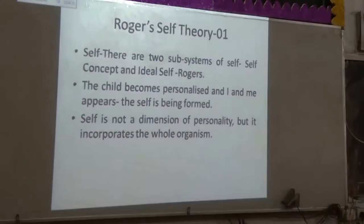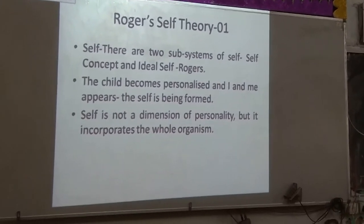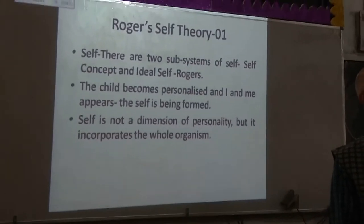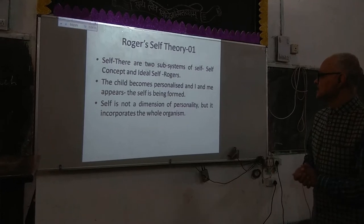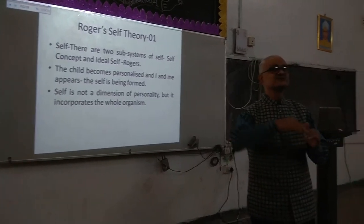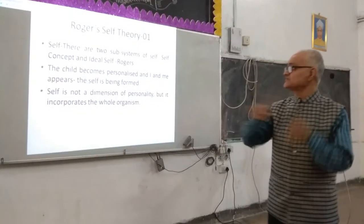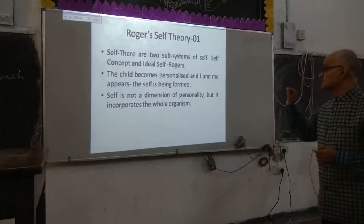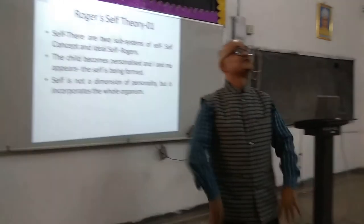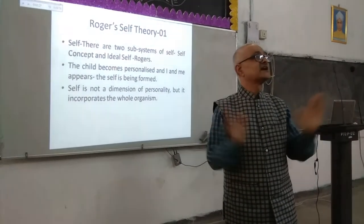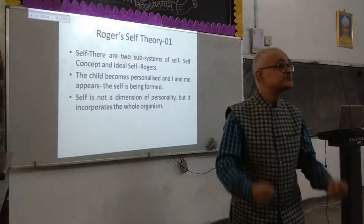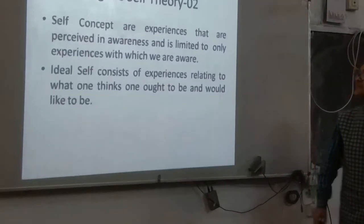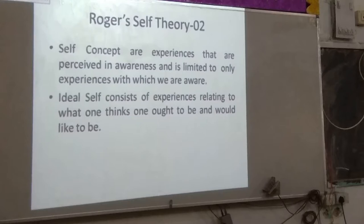Rogers concludes that the child becomes personalized as soon as he or she starts to think in terms of I and me. Self is not a dimension — not physical, emotional, mental, or any other. But it incorporates the whole of us. Self is complete. Self is not any dimension of personality, but it is a complete personality.